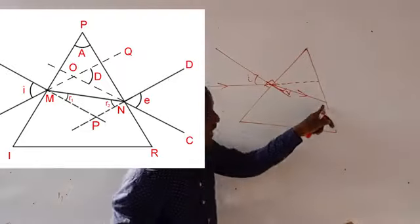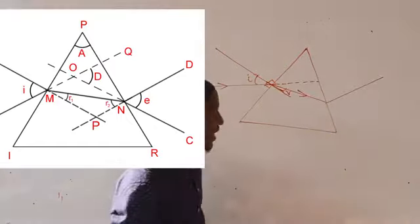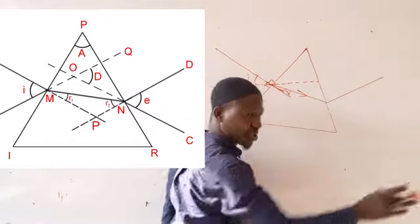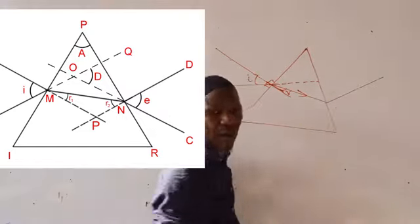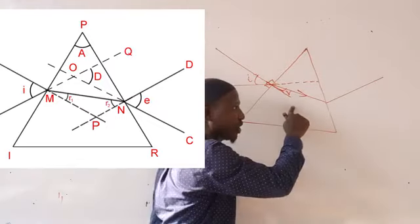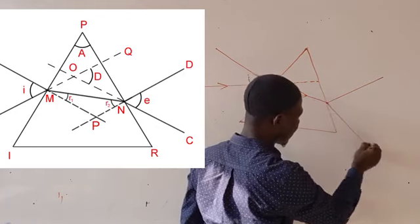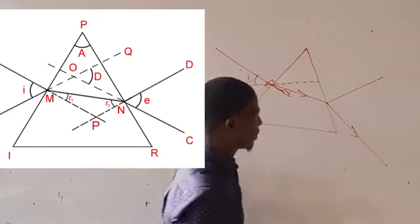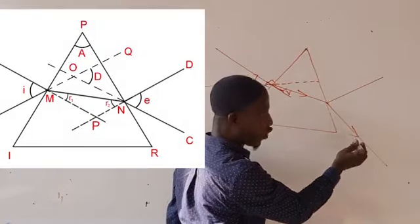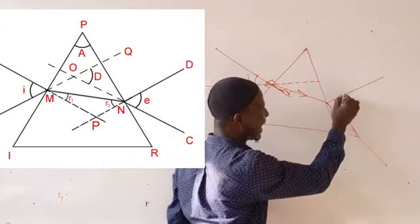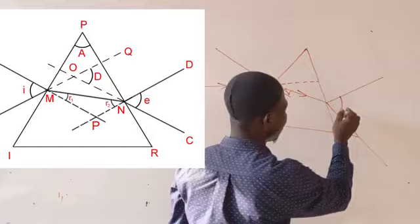On the other side, you draw a normal as well. Then instead of the ray of light going straight, it will move away from the normal because it is now moving from a dense medium to a less dense medium. This is the emergent ray, and the angle between this emergent ray and the normal is called the angle of emergence.